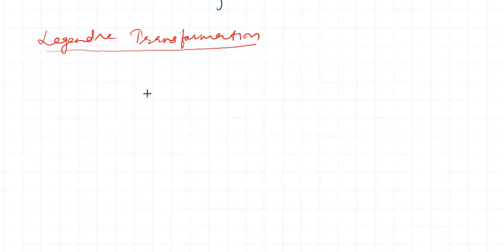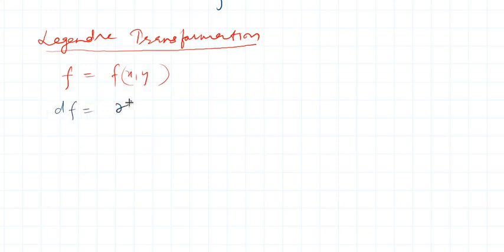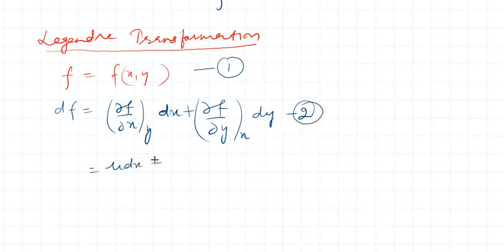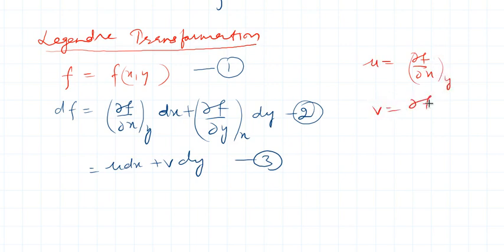Let us go to the mathematics of Legendre transformation. Let f be a function of x and y. If I take the differential of both sides, then df can be written as (∂f/∂x) at constant y times dx, plus (∂f/∂y) at constant x times dy. Let me call this equation number one and two, and it can be written as u dx plus v dy — equation number three.